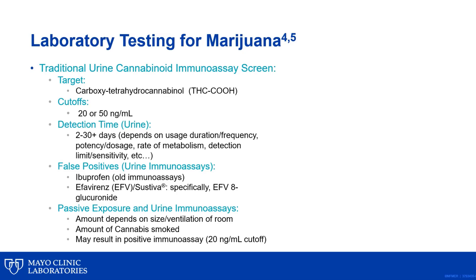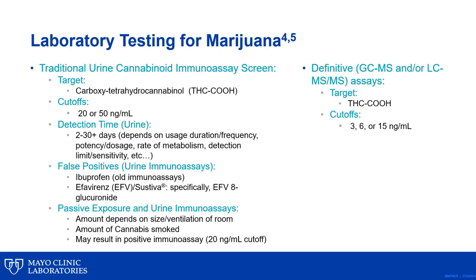While the immunoassays for marijuana are targeted against a specific metabolite, they still can have potentially false positive results. For example, the metabolite of an antiviral medication, Cystiva, used to treat HIV can cross-react and give positive results. Another question commonly asked is if passive exposure to marijuana will give a positive immunoassay result. While it is possible if using the lower 20 nanogram per ml cutoff, it really depends on the size and ventilation of the room and the amount of cannabis smoked — in very confined spaces for prolonged exposure, a person could test positive. Laboratories also offer definitive tests using gas chromatography or liquid chromatography tandem mass spectrometry that also commonly target the carboxytetrahydrocannabinol at lower detection limits.